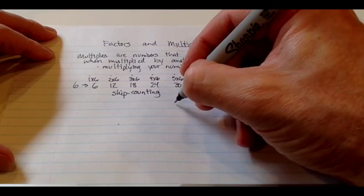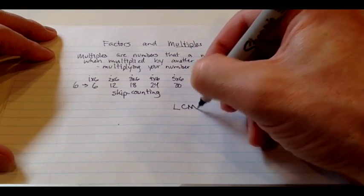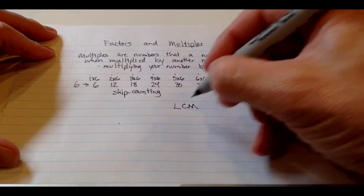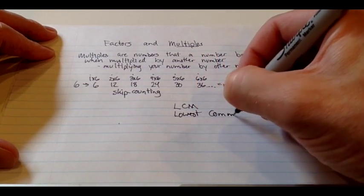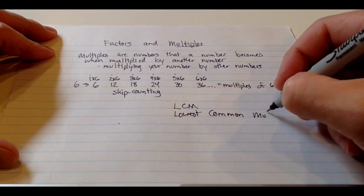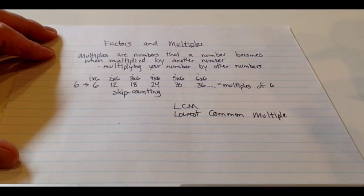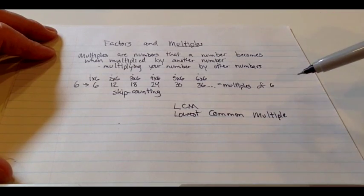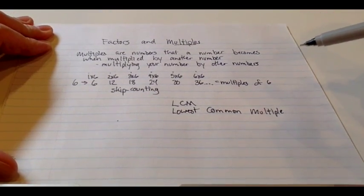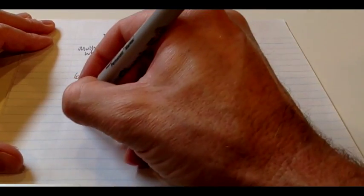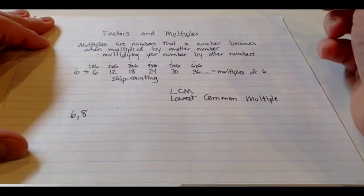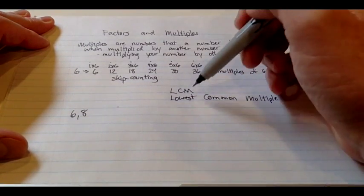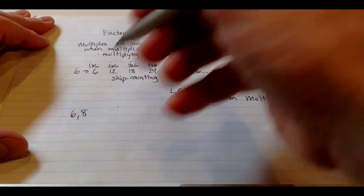One other thing that you will need to know about: LCM stands for lowest common multiple. And sometimes you'll be asked to find the lowest common multiple of two other numbers. Usually they'll be smaller numbers, so let's say 6 and 8. We've got 6 up here, let's keep it a little bit simple. We're looking for the lowest common multiple of 6 and 8.